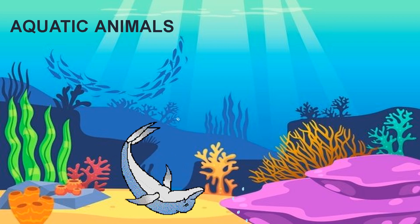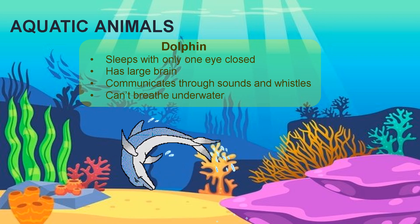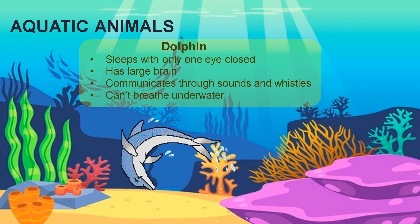You must have already seen them a lot of times, right? Yep, you guessed it right — it's a dolphin. They sleep with only one eye open. Isn't it funny? We sleep with both eyes closed and they sleep with one eye closed and the other one open. They have a large brain. They communicate through sound and whistles. They can't breathe underwater, so they cannot stay very long underneath the water.